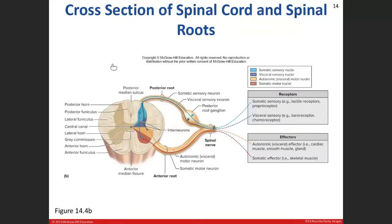Here you can see the posterior gray horn, the anterior gray horn, and the lateral gray horn. In the posterior gray horn, sensory neurons enter in — both somatic sensory and visceral sensory neurons — and they'll either synapse onto an interneuron or ascend up into the spinal cord. The anterior horn contains the cell bodies for the somatic motor neurons. The lateral horn contains the cell bodies for the autonomic or visceral motor neurons.